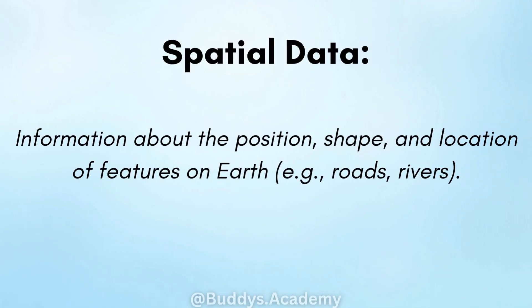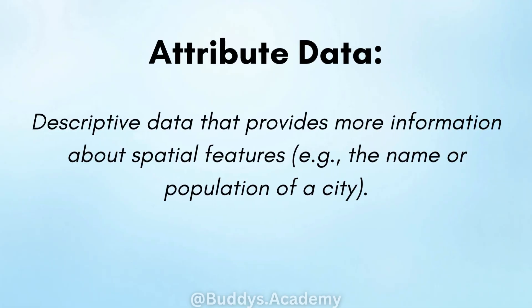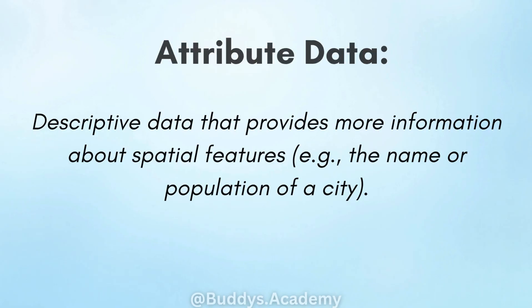Spatial data: this is information about the position, shape and location of features on earth. Examples would be roads and rivers. Attribute data: this is descriptive data that provides more information about spatial features — for example, the name or population of a city.